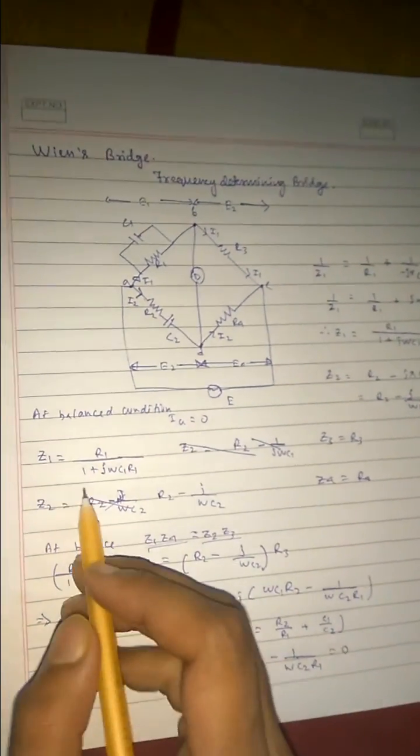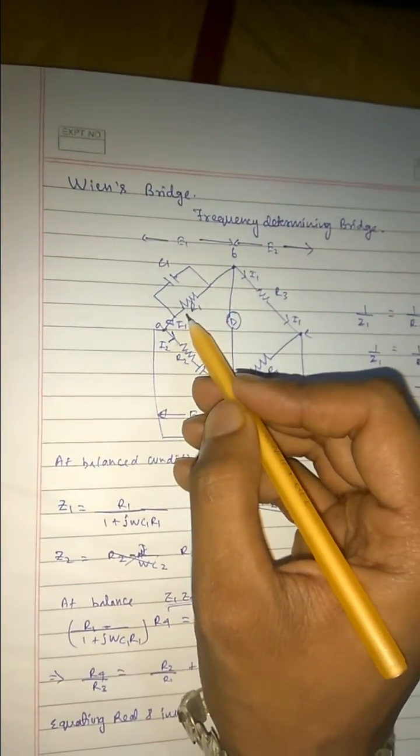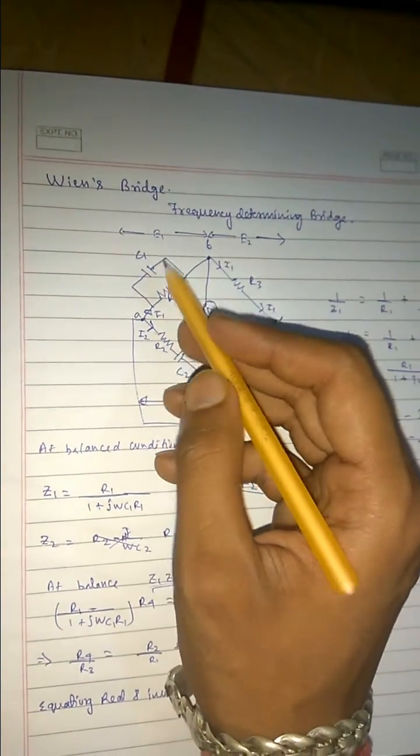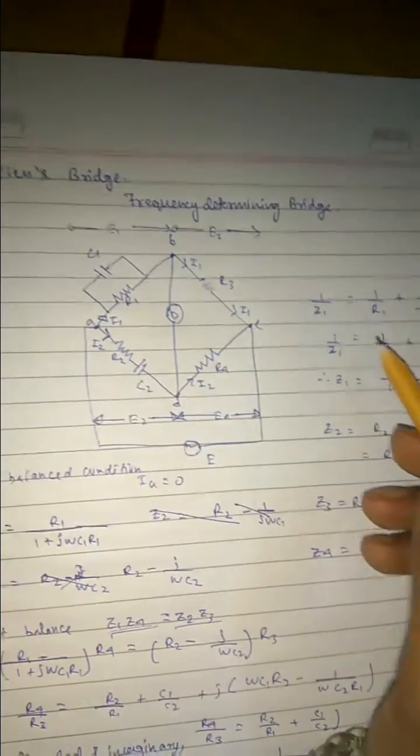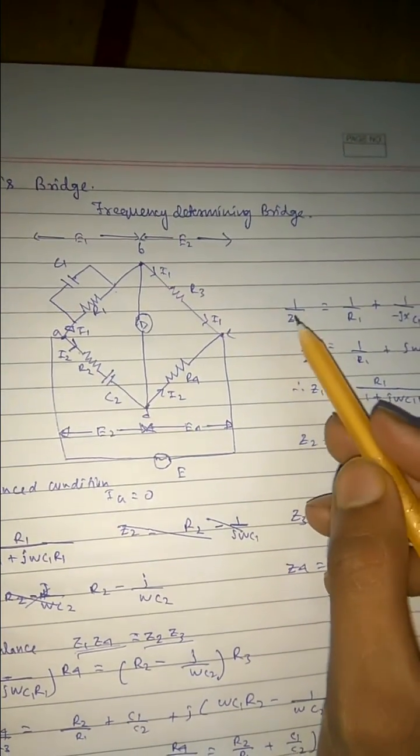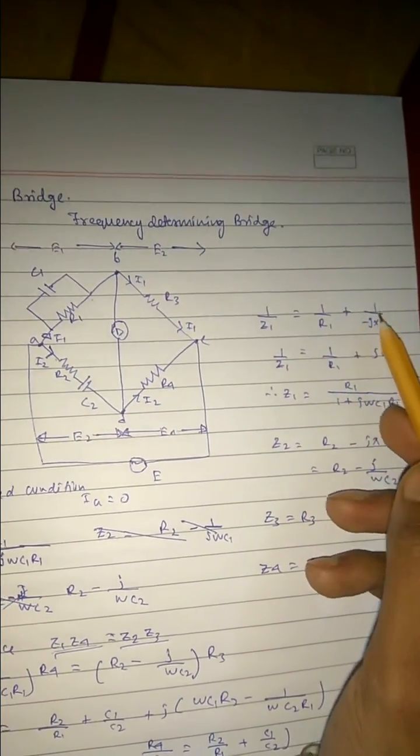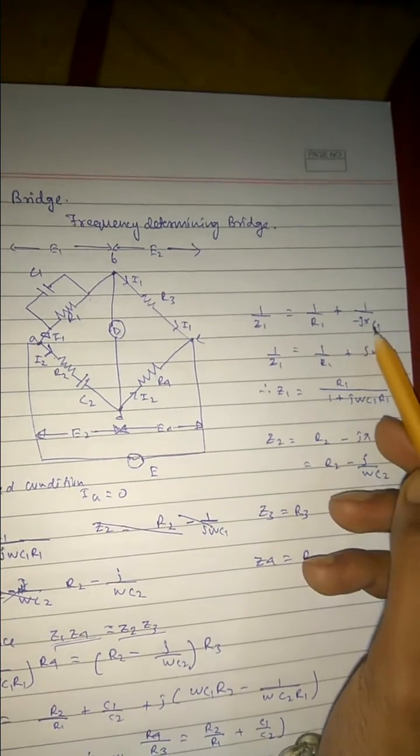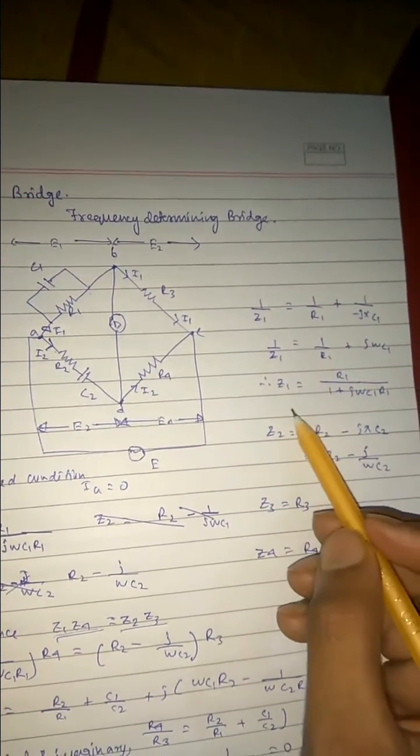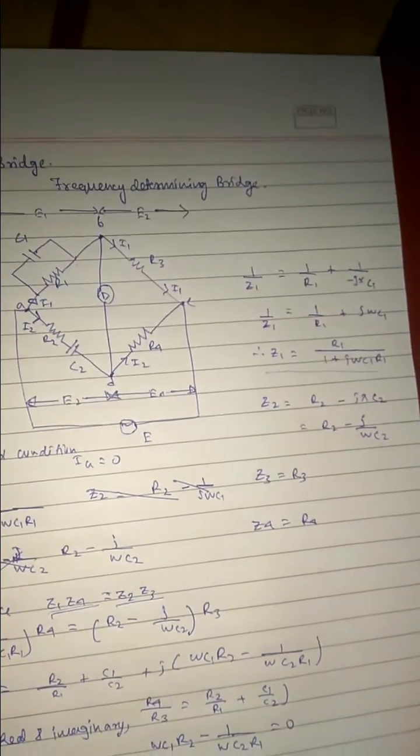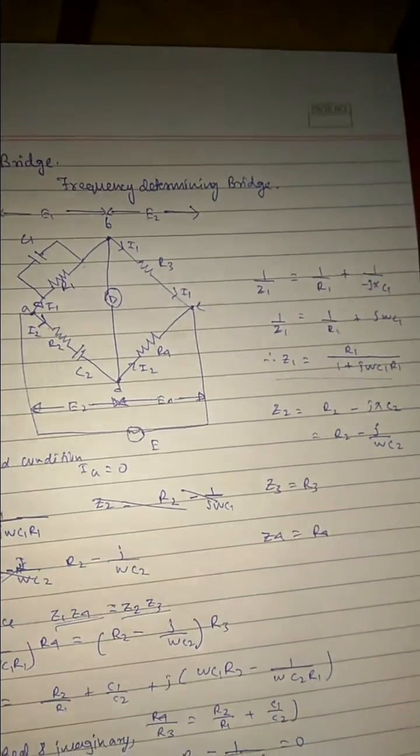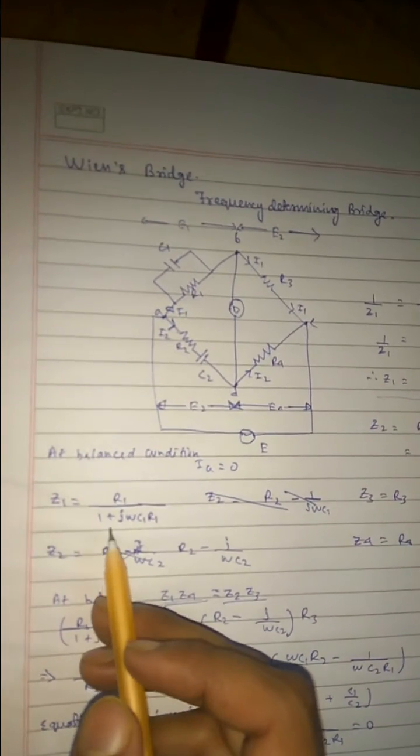So z1, z1 is i1 into R1 plus j omega C1. Or since this is in parallel, so 1 by z1, that is impedance, equals to 1 by R1 plus 1 by minus j·Xc1. Calculating this, we will get this expression: z1 equals to R1 by 1 plus j·omega·C1·R1. So our z1 is R1 by 1 plus j·omega·C1·R1.